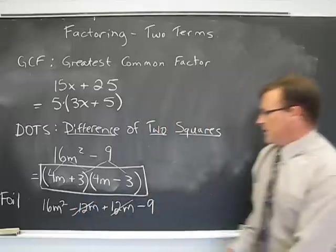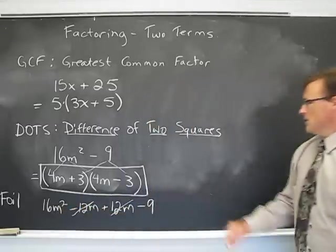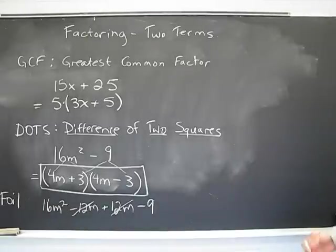And positive 3 times negative 3 is the negative 9. Now when you multiply it out, these two terms are going to cancel out, leaving you with the 16m squared minus 9. Which just shows that it works.